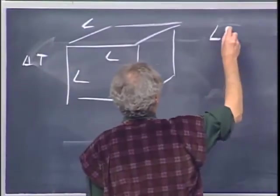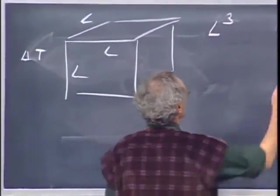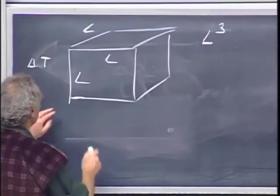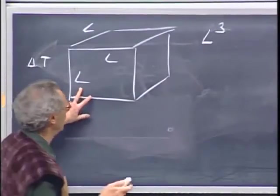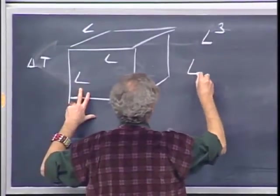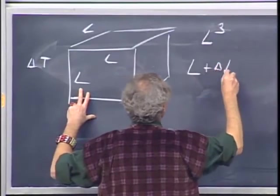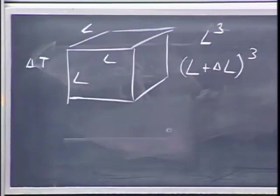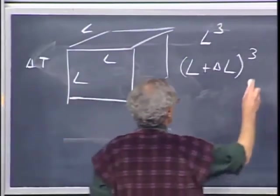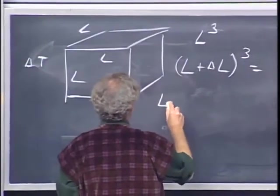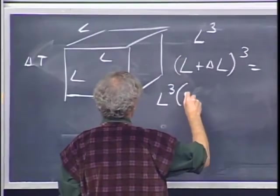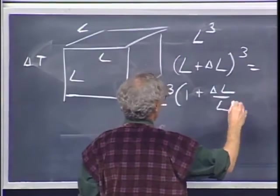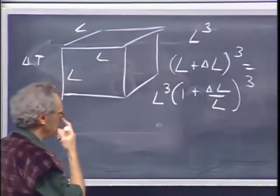Well, the old volume is L cubed, and then I'm going to increase the temperature by delta T, so all these sides will get longer by amount delta L, and so the new volume will be L plus delta L to the power three. This can also be written as L to the third times one plus delta L over L to the power three. Same thing, right?